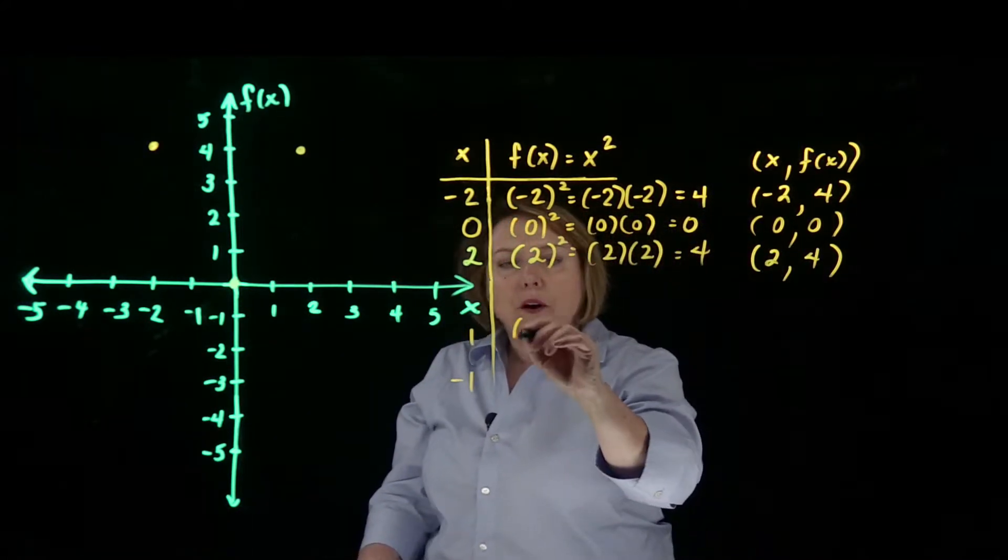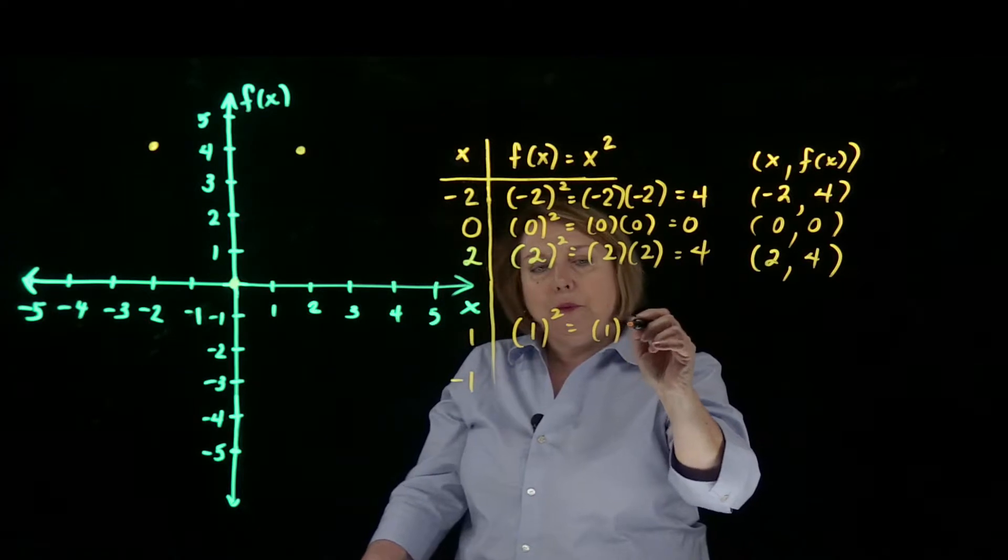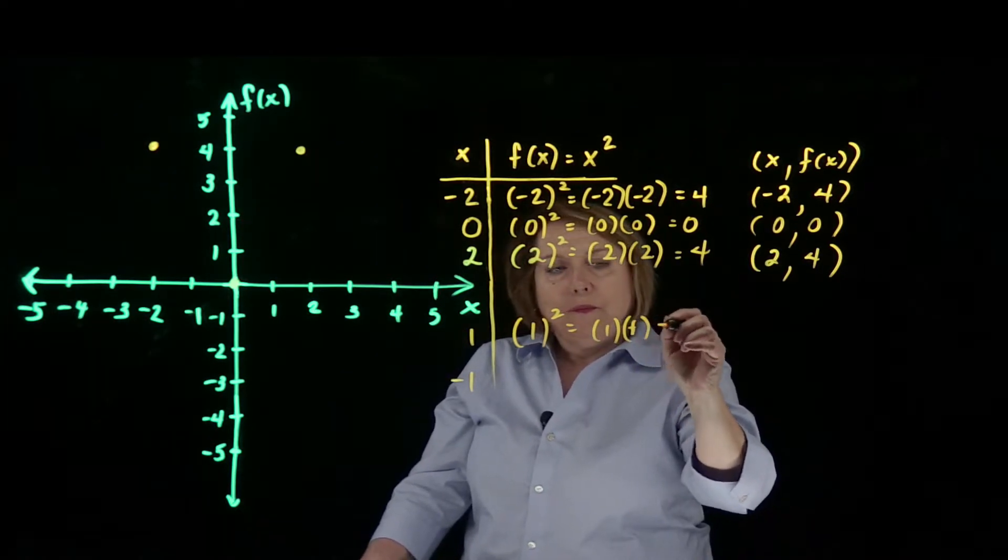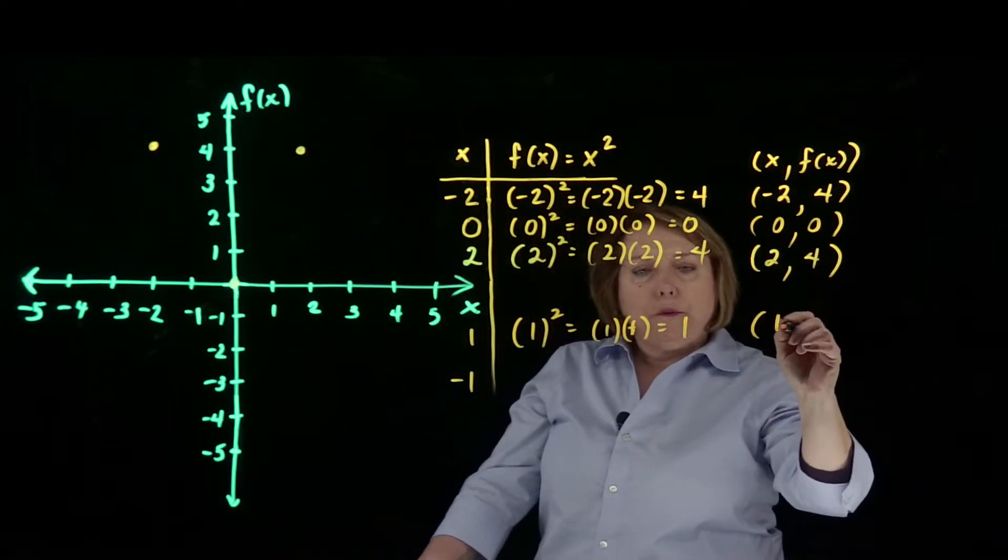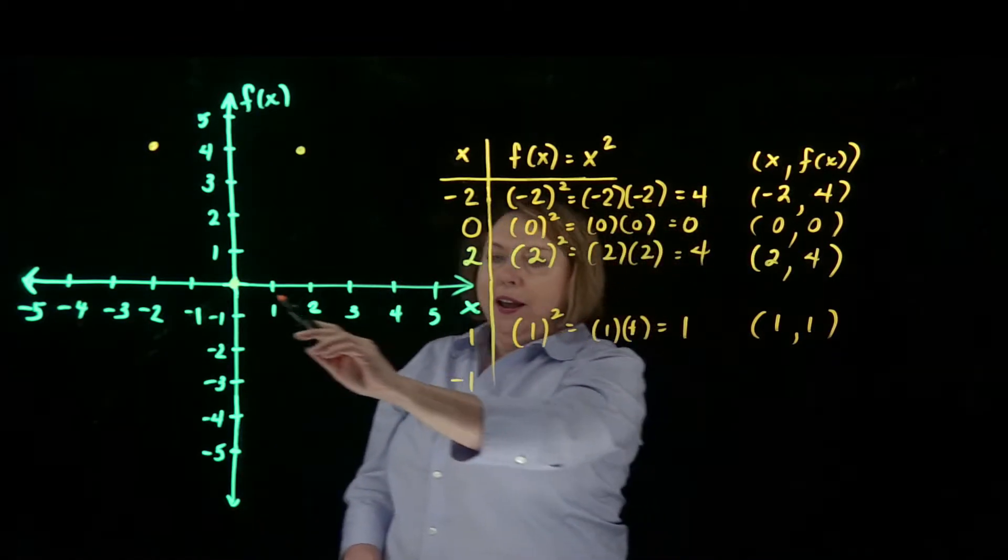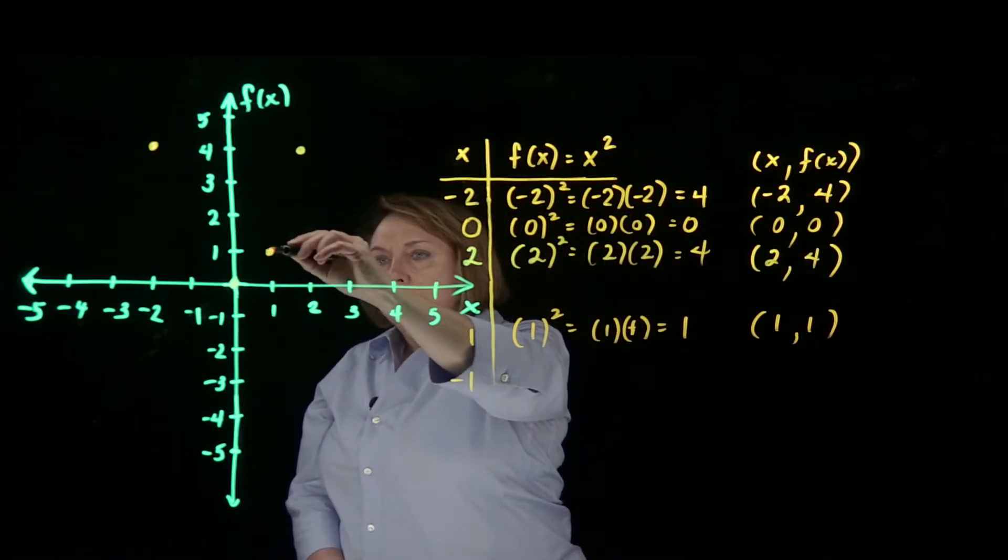So if x is 1, we'll have 1 squared, which is 1 times 1, which is 1. My ordered pair would be 1 comma 1, so x is 1, and y or f of x is 1.